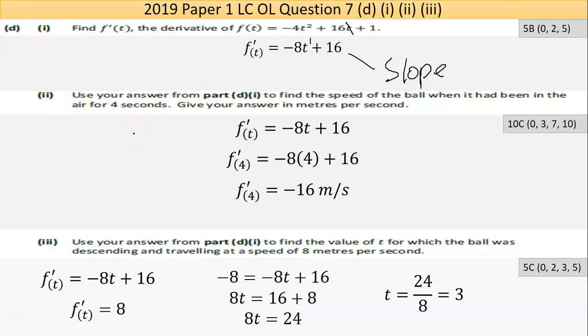Part two says, use your answer from part D, part one to find the speed of the ball when it had been in the air for four seconds. Give your answer in metres per second. So I'm basically using the slope equation I just found by differentiation. Or in essence, whatever answer I got here. And even if I wasn't able to differentiate, you could make up some answer that is accepted as perfectly correct in the next part. Put your value of T in. I was told it was four. Put it through the rule. And I end up with the calculator getting an answer of negative 16 metres per second.